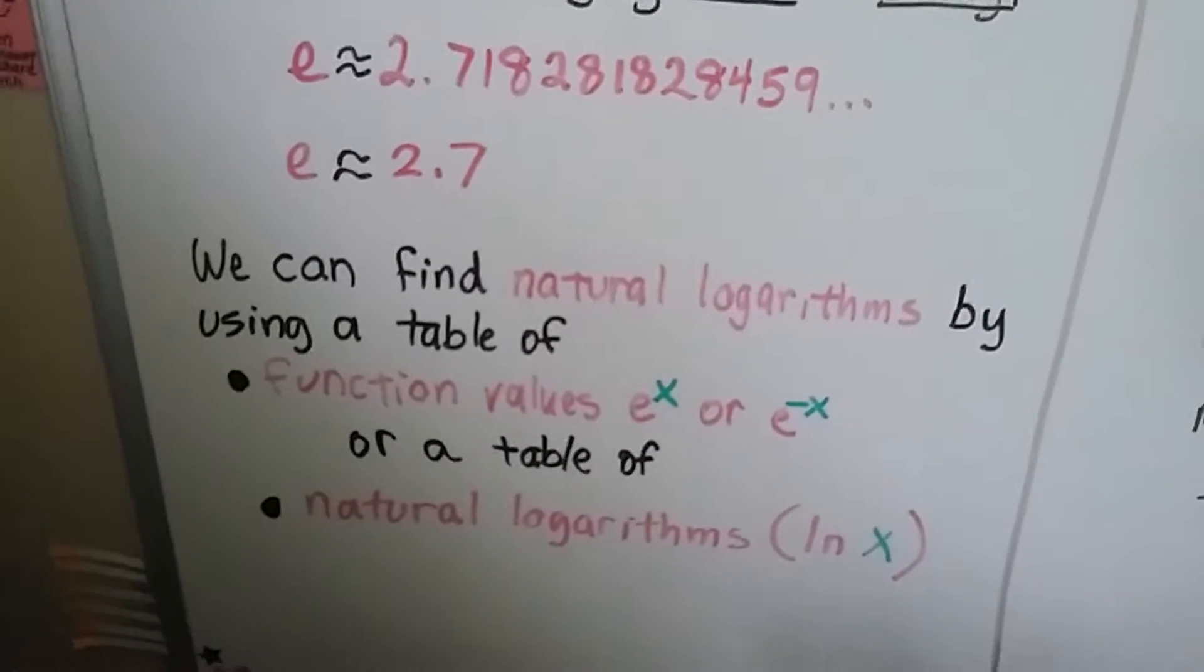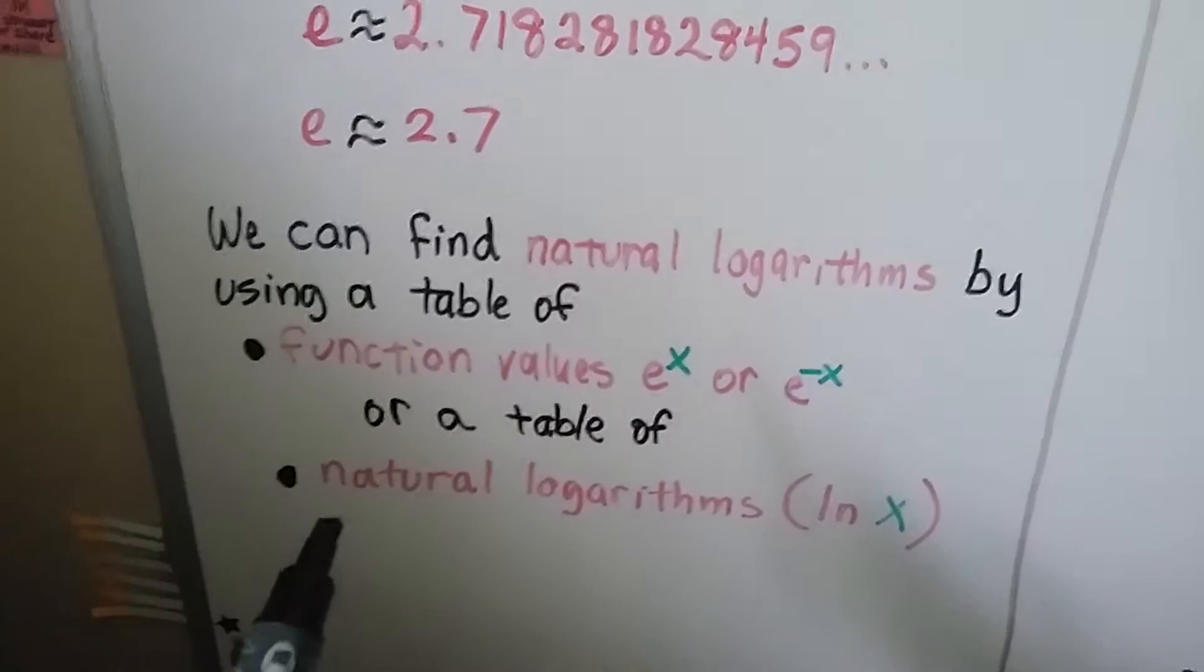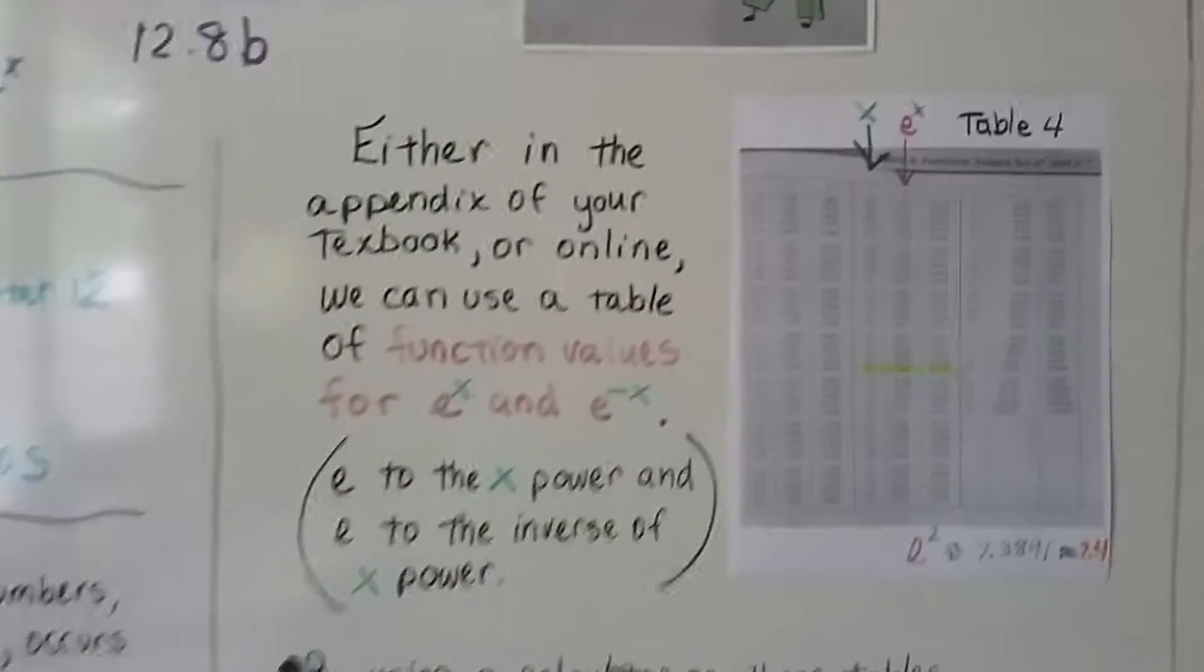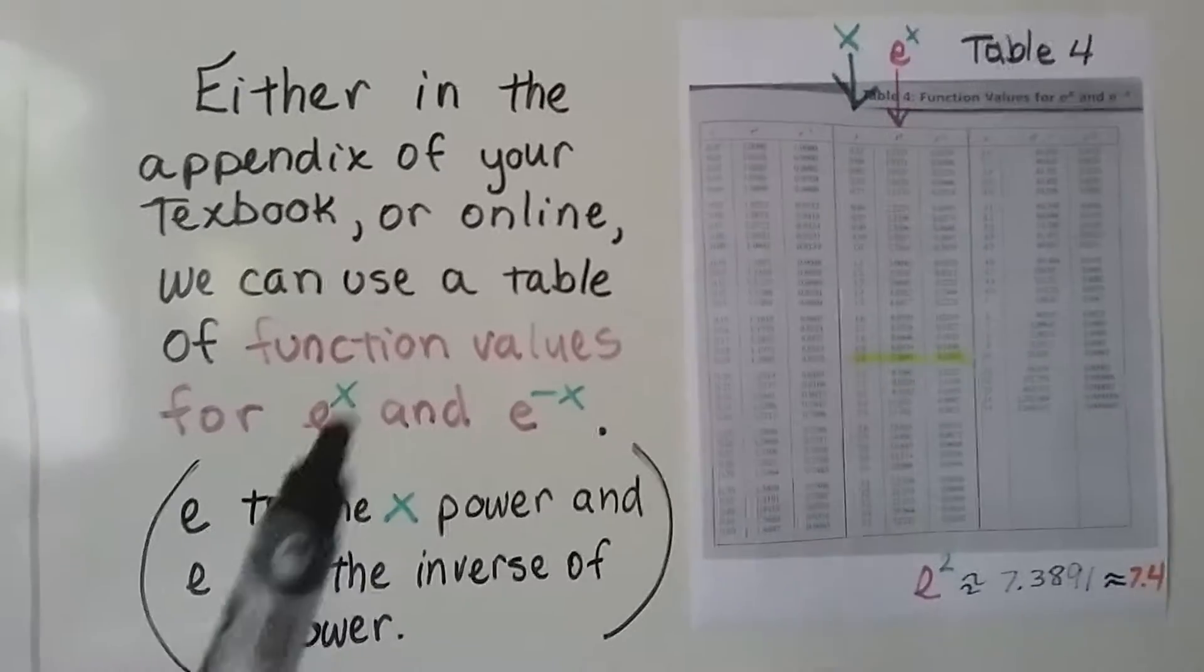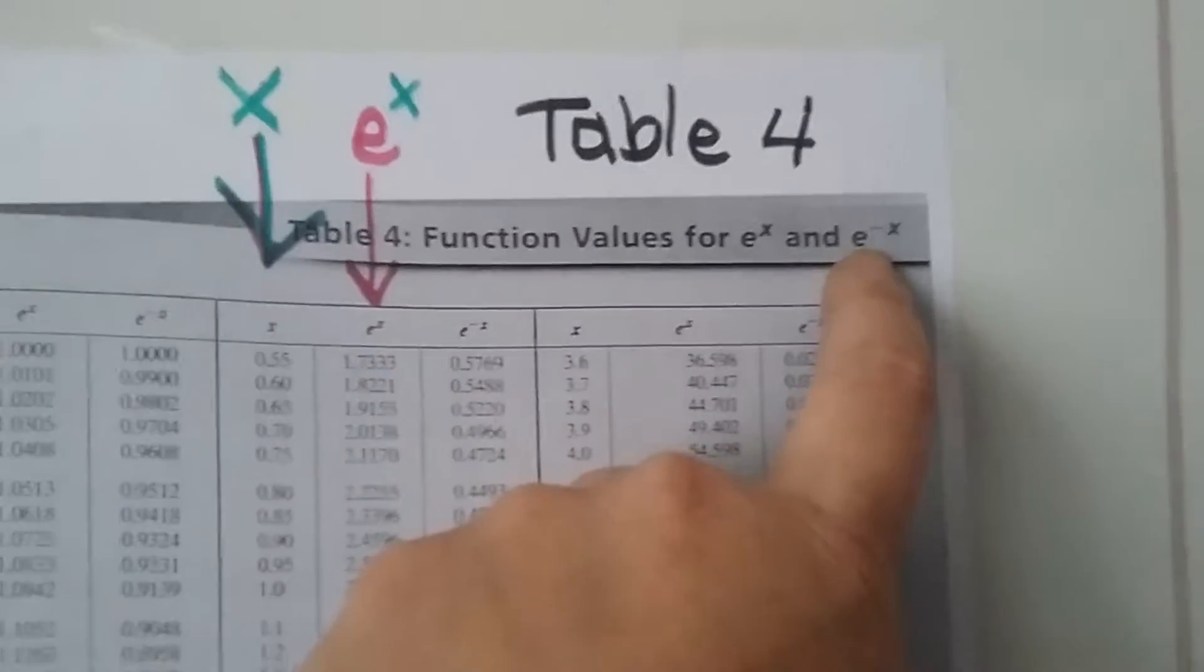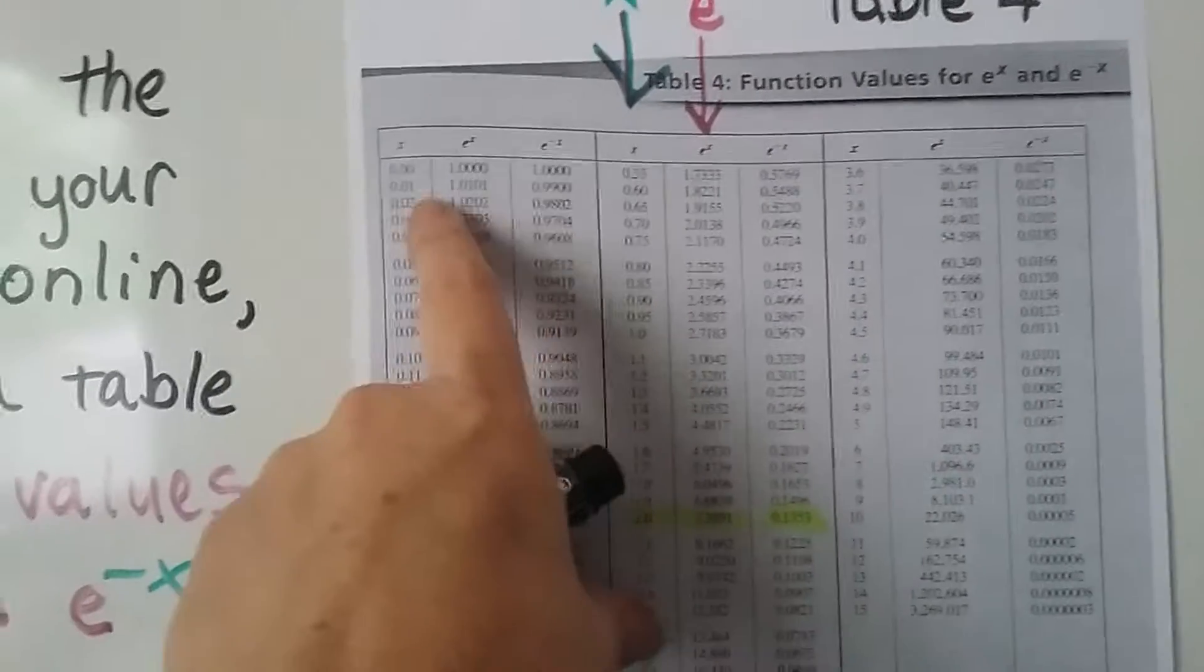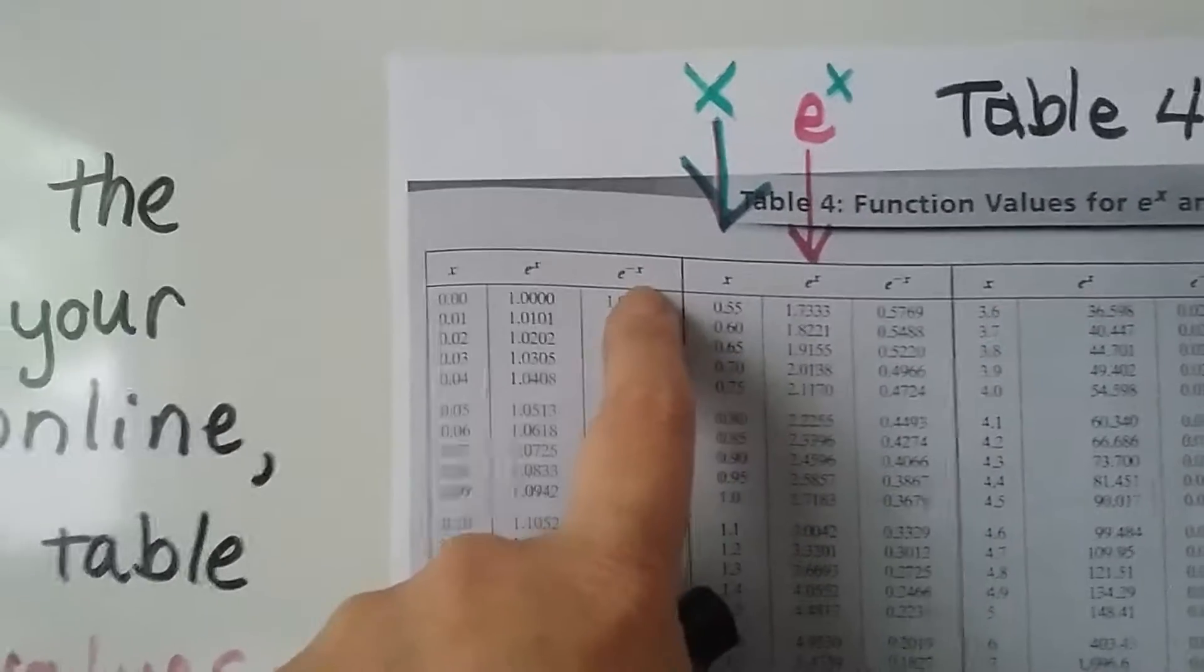We can find natural logarithms by using a table of function values for e to the x or e to the inverse of x, or a table of natural logarithms, ln x. Either in the appendix of your textbook or online, you can use a table of function values for e to the x and e to the inverse of x. It was table 4 in my book. The way we read this is, if we're trying to find x, here's the x values, here's the e to the x values, and here's the inverse ones.